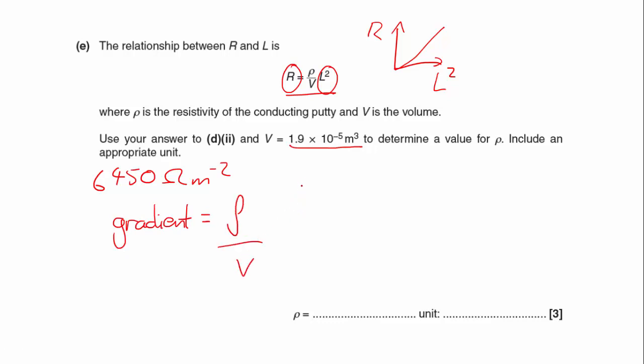So therefore rho, the resistivity, is going to be the gradient multiplied by the volume. So that gives me my 6450 multiplied by 1.9 times 10 to the minus 5.